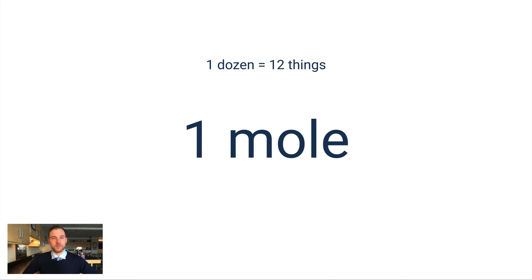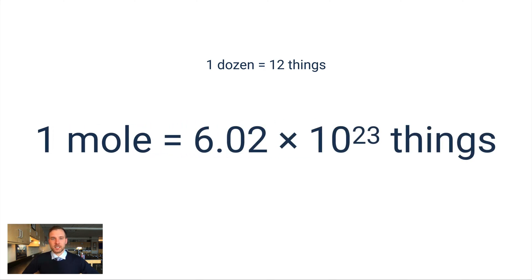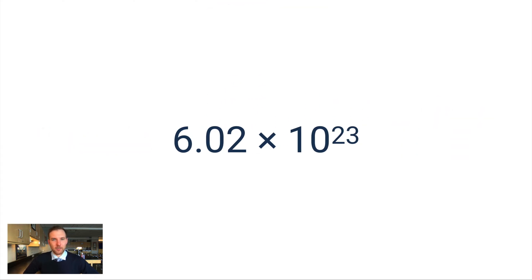A mole is very similar. One mole of something is simply 6.02 times 10 to the 23rd of that thing. In chemistry we're usually referring to particles when we use this number, because particles are so small and there are so many of them in a sample that we need a unit that represents a very large number to describe how many particles we're talking about.